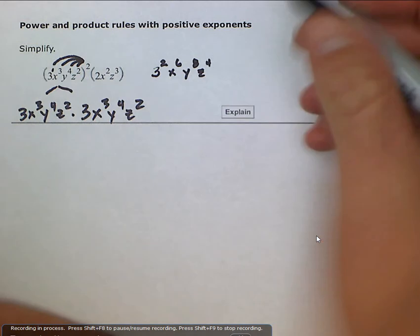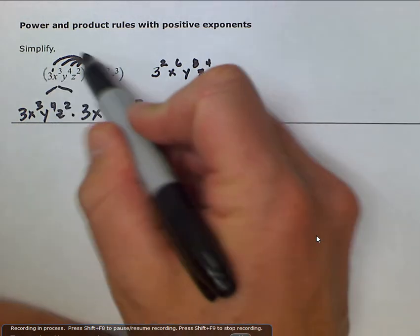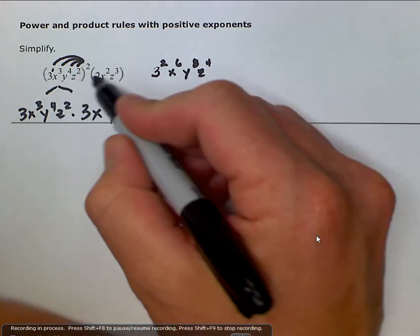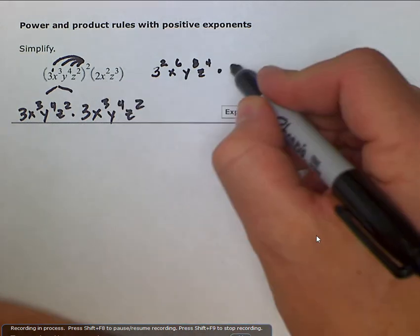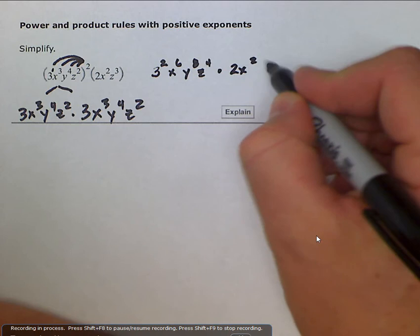So this first term here becomes this, and then we still are multiplying it by this second part: two x squared z to the third.